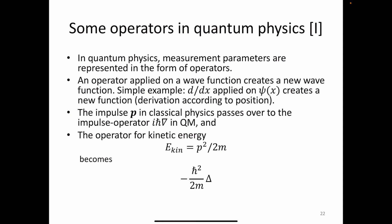In quantum physics, measurement parameters are represented as operators — and that's also what we do in quantum computing. An operator applied to a wave function creates a new wave function, just as applying a transformation to a state gives a new state. A simple example: d/dx applied to a wave function psi creates a new function by differentiation with respect to position. The classical impulse passes over to the impulse operator in quantum mechanics — expressed as i*h-bar times del.